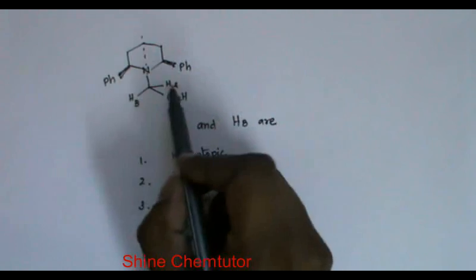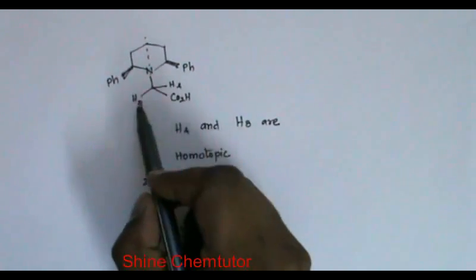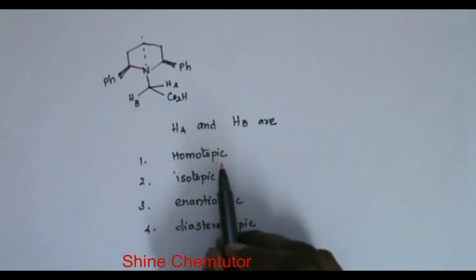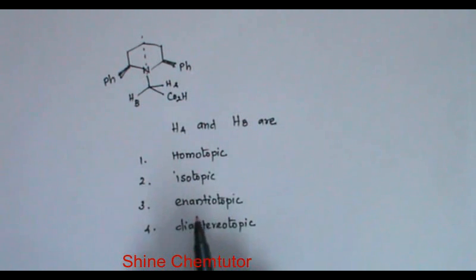Now they have given two hydrogens here, HA and HB. What is the relation between these two protons HA and HB? Are they homotopic, isotopic, enantiotopic, or diastereotopic?